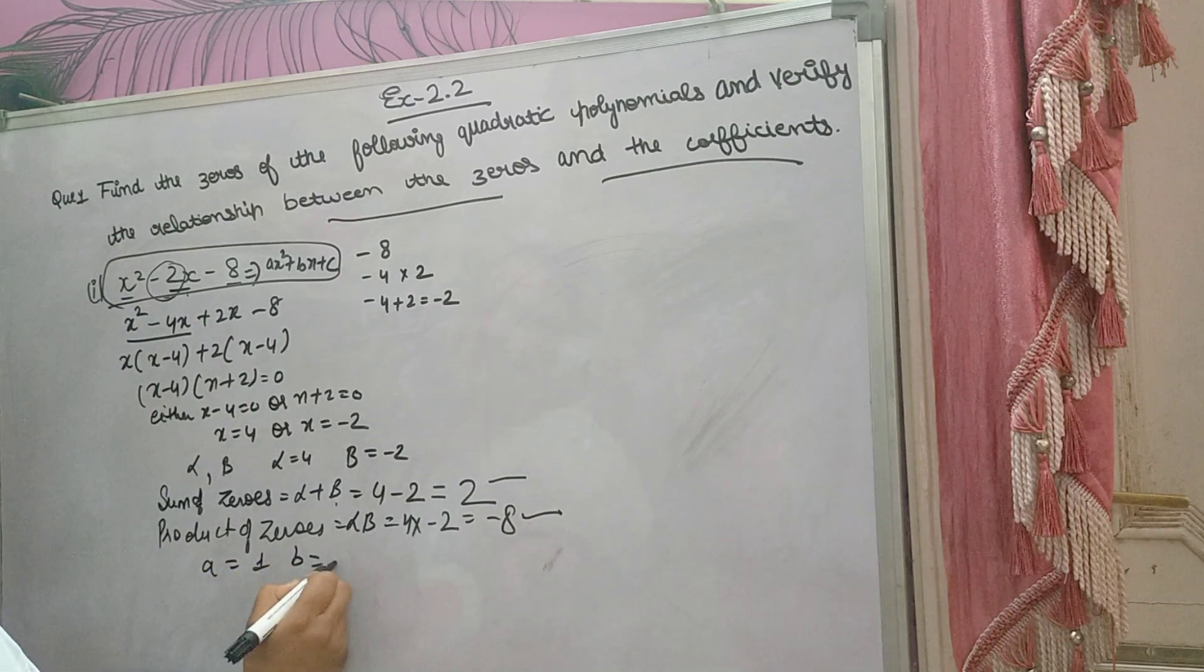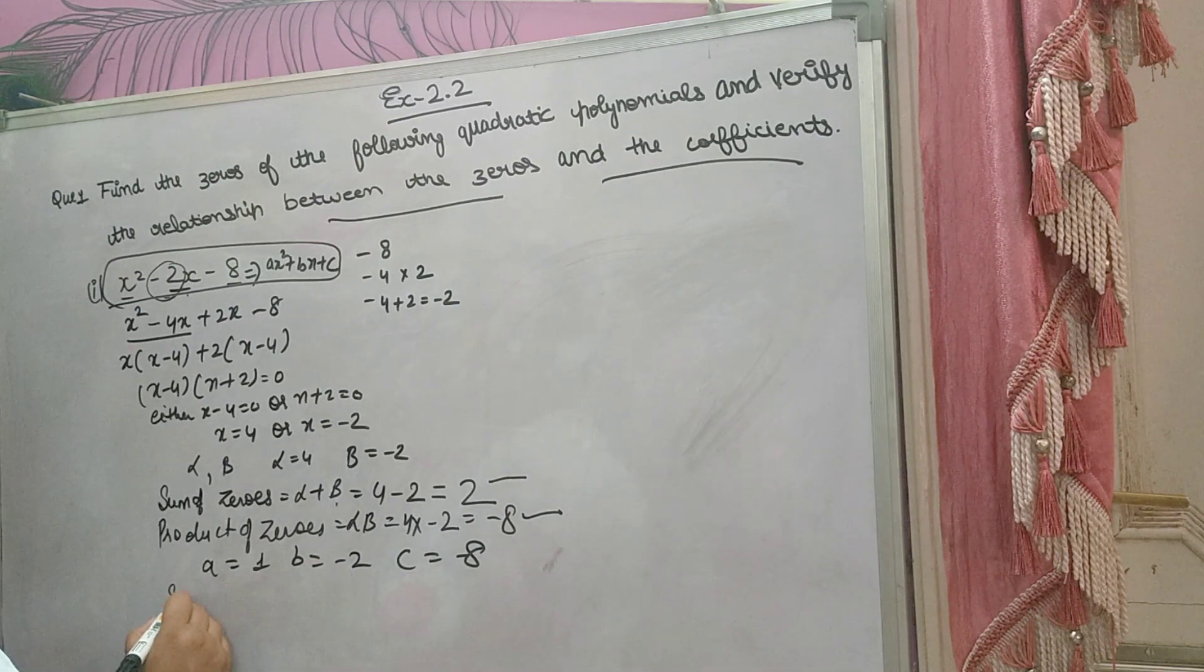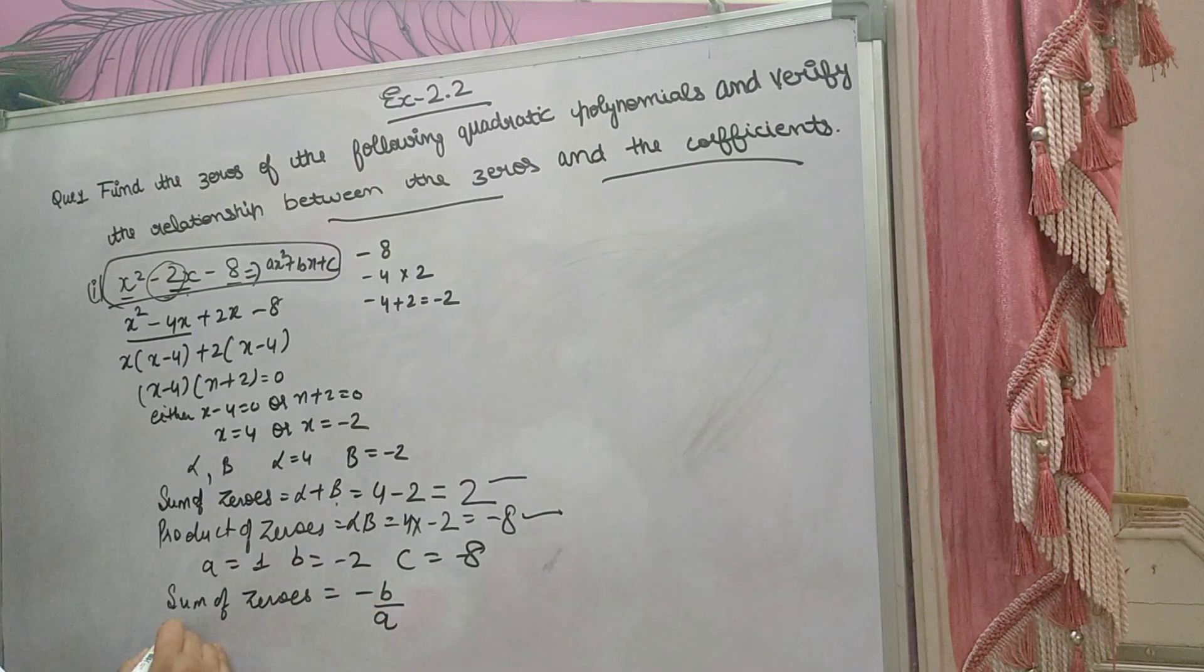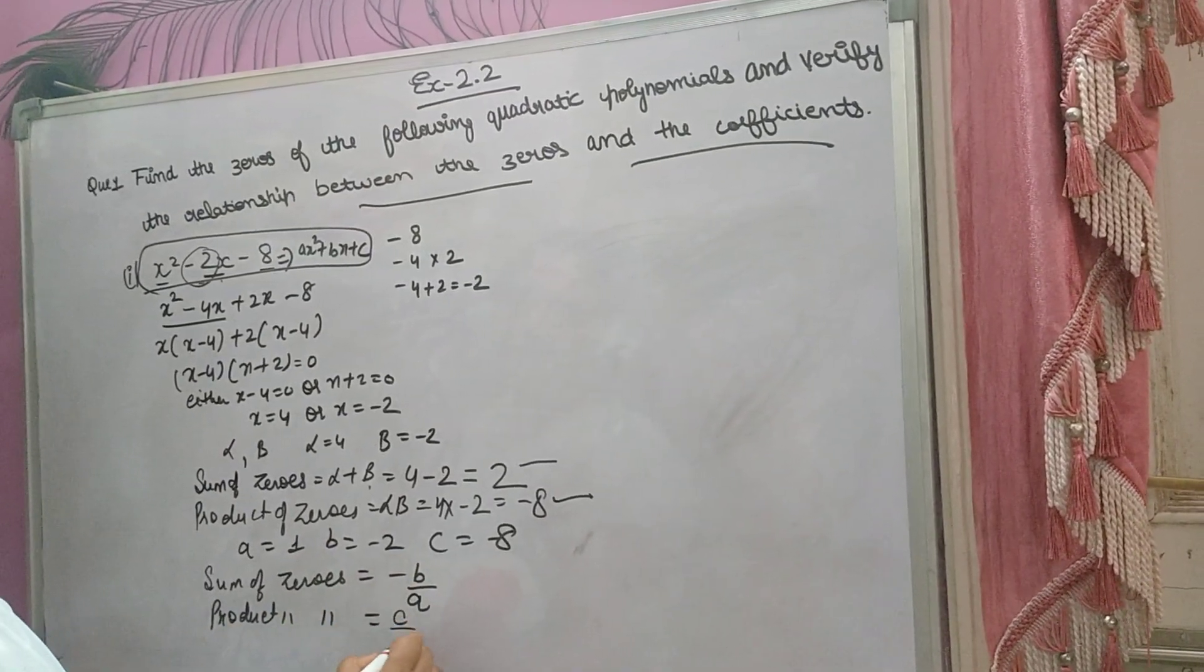b is equal to minus 2, and c is equal to minus 8. Now according to this, sum of zeros, this formula you have to learn, is equal to minus b over a. And product of zeros according to coefficient is c over a.